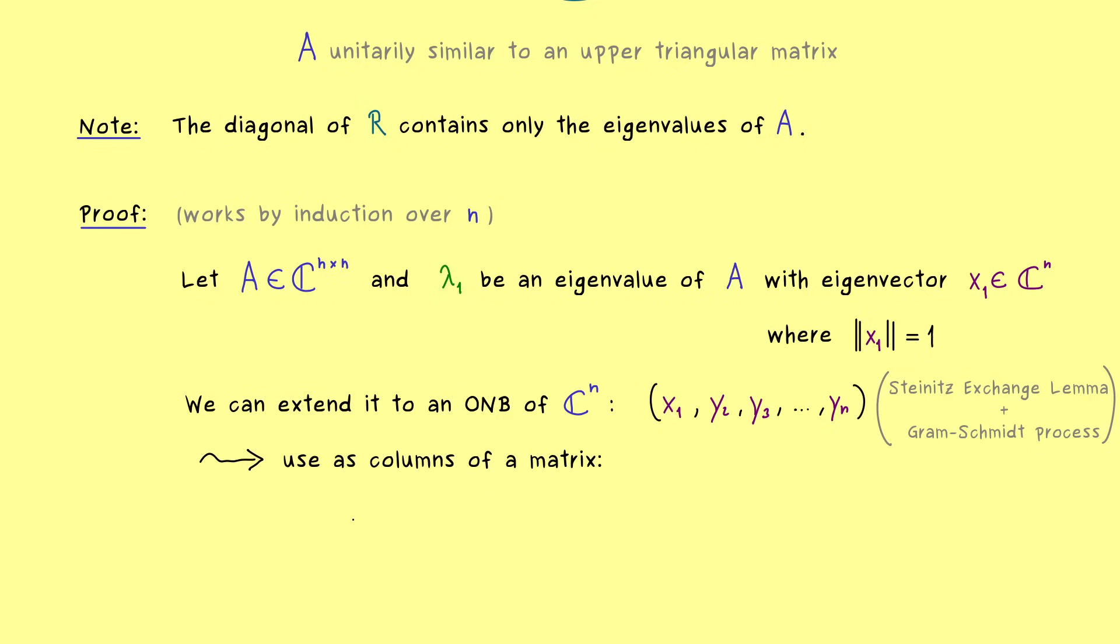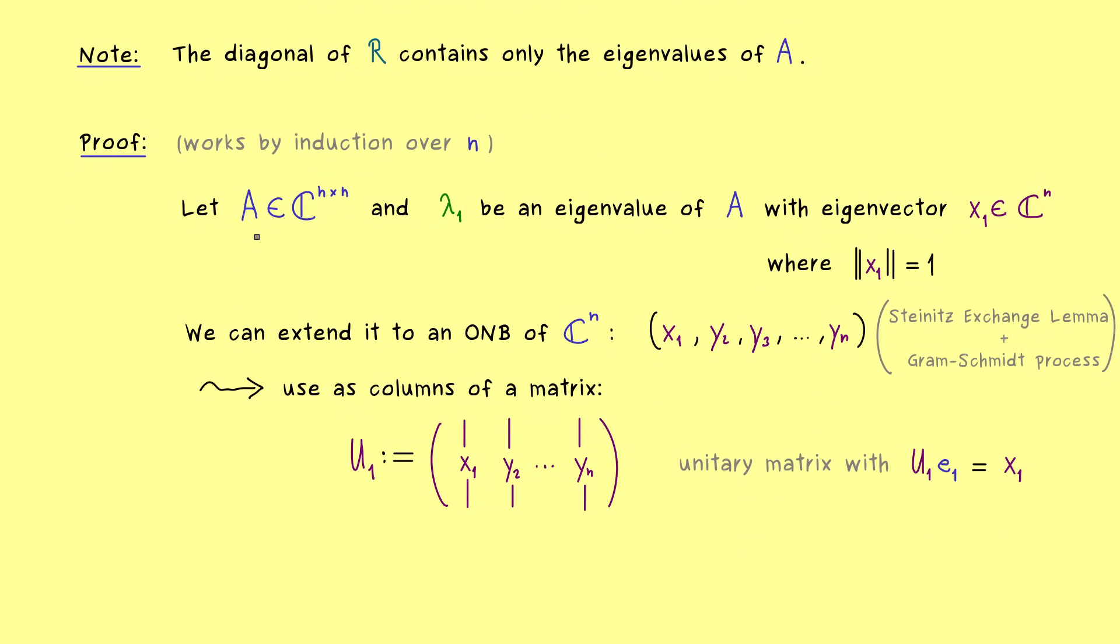And now we can put these vectors into the columns of a matrix. Hence we get a unitary matrix and we call it U_1. And now most importantly, the first column of this new matrix is given by our eigenvector x_1. And the other y vectors are not so important. It's just important that we get a unitary matrix in the end. So again, the important property of U_1 is, if you apply it to the standard canonical unit vector e_1, then we get our eigenvector x_1. And this is the property we can use to transform our matrix A.